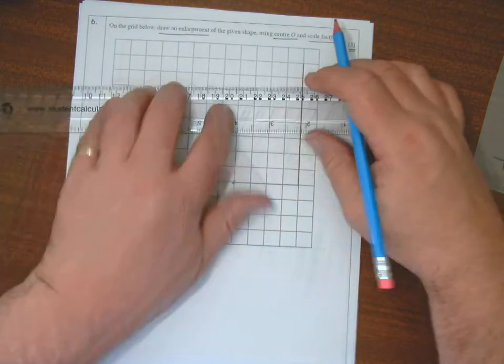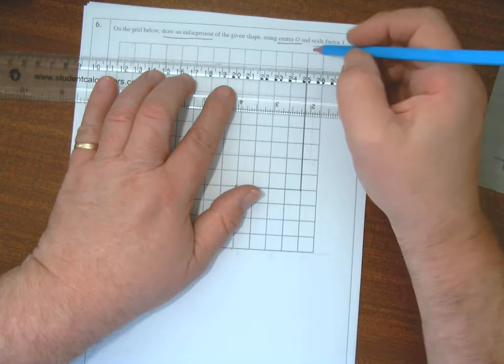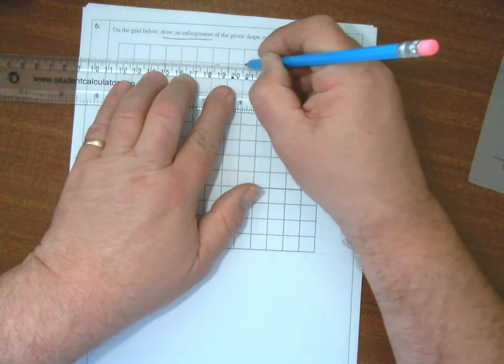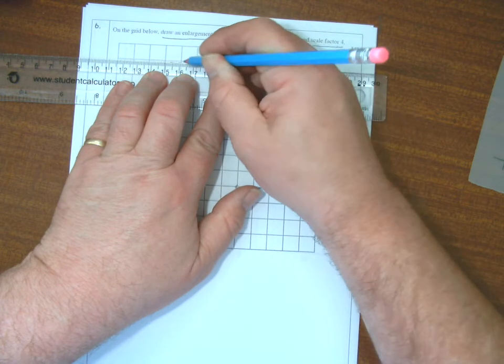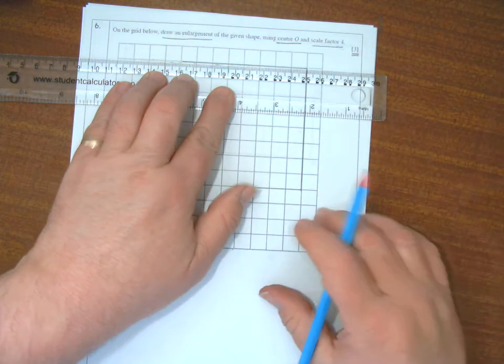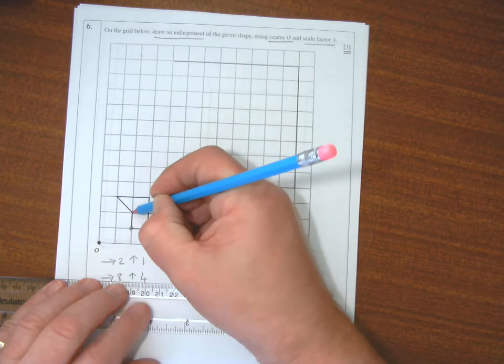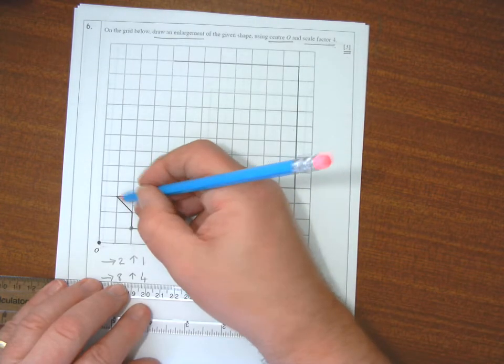Across two, so now I go across eight: one, two, three, four, five, six, seven, eight. Then this is diagonal one.